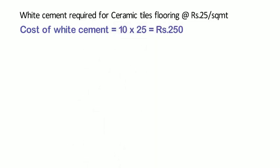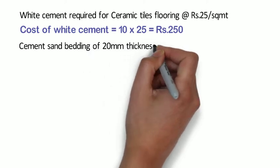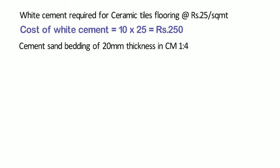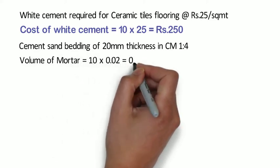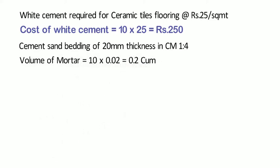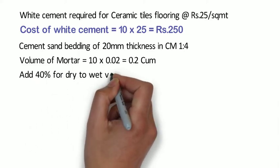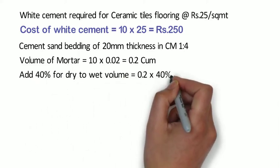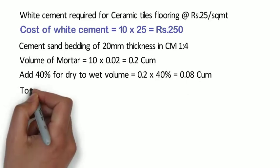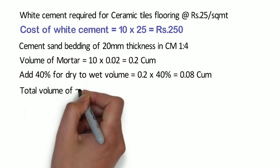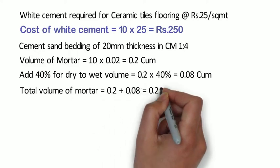For ceramic tile flooring, cement sand bedding of 20 mm thickness in cement mortar 1:4 is used. Volume of mortar shall be 10 x 0.02 = 0.2 cubic meter. Adding 40% for dry to wet volume conversion: 0.2 x 40% = 0.08 cubic meter. So total volume of mortar shall be 0.2 + 0.08 = 0.28 cubic meter.